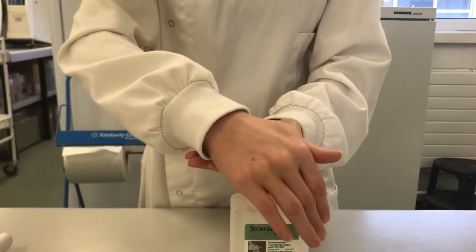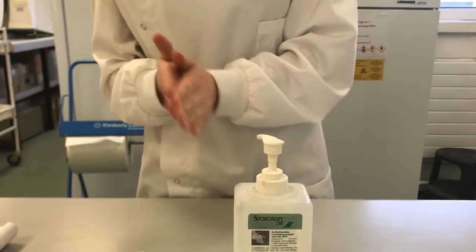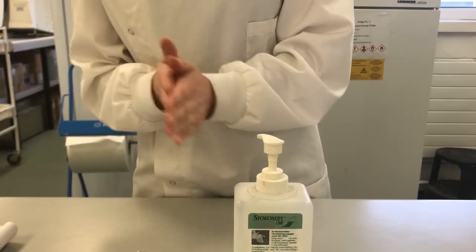Remove all hand and wrist jewellery and ensure that nails are kept short. Apply about 3ml of alcohol gel and rub into the palms of your hands.